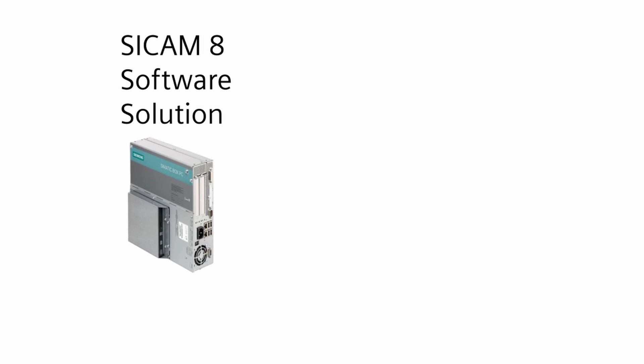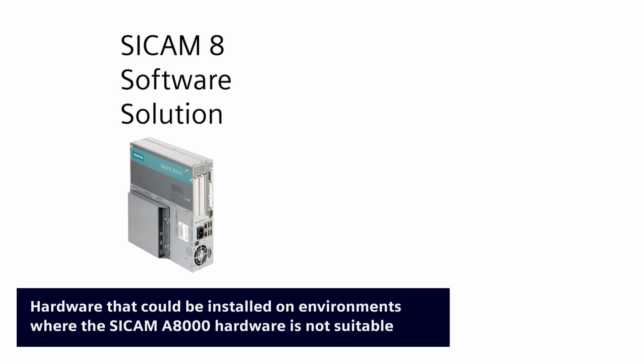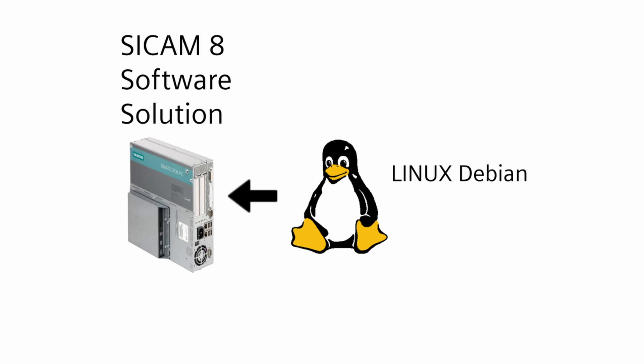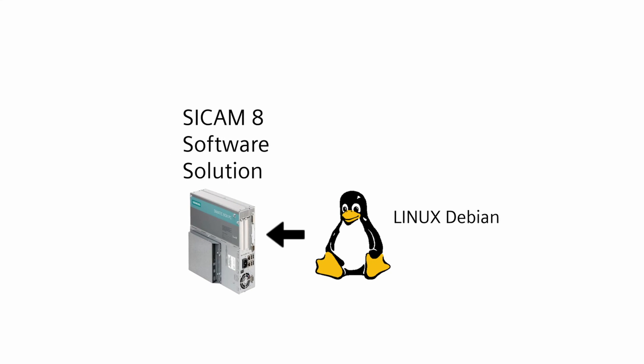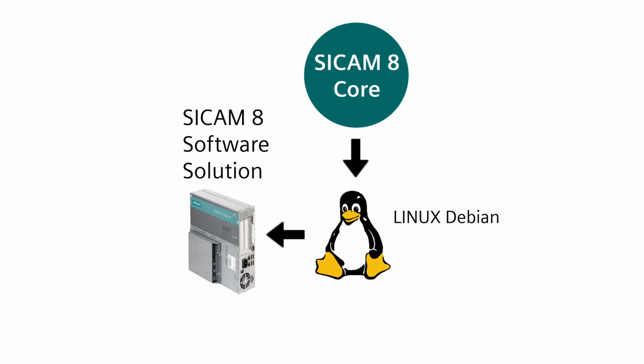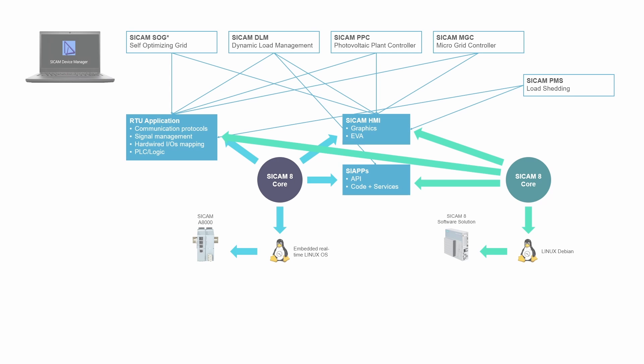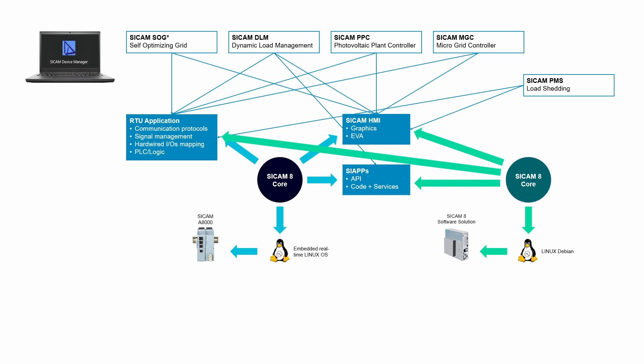You can also select hardware that could be installed in environments where the CCAM8000 hardware is not suitable, such as in offshore platforms. All you have to do is equip your selected hardware with the operating system Debian 12 or 11, which will interact with the hardware available on the computer. On top of that, you install the CCAM8 software solution package. With that, a CCAM8 software solution instance with the CCAM8 core is installed on the Debian PC. From that moment on, this instance behaves exactly as if it were a brand new CCAM8000.